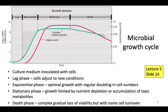In the lag phase, cells adjust to new conditions. This is followed by optimal growth with regular doubling in cell numbers — that is called the exponential phase. Then nutrient depletion or accumulation of toxic metabolites leads to bacterial cell growth limitation in the stationary phase. Finally, the death phase is reached, where you will see a gradual loss of viability of the cells.